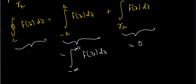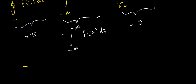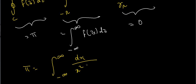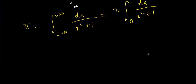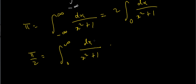So we can now evaluate our original definite integral. We have π = the integral from −∞ to ∞ of 1/(z² + 1) dz. Along the real axis z varies only with x, so this is the integral from −∞ to ∞ of dx/(x² + 1). Since 1/(x² + 1) is an even function, this equals twice the integral from 0 to ∞ of dx/(x² + 1). Dividing both sides by 2 gives π/2 = the integral from 0 to ∞ of dx/(x² + 1). That's how we evaluate the definite integral using contour integration.